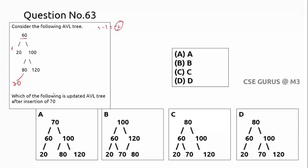To rebalance, we identify the rotation case. There are four cases: left-left, left-right, right-left, and right-right. In this case, clearly observing the path from the unbalanced node 60 downward, this is a right-left case. We label the unbalanced node as X, its right child as Y, and Y's left child as Z.